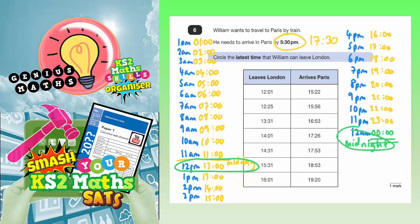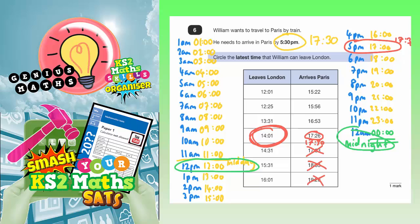So back to the question. He needs to arrive in Paris at 5:30pm. Well, 5:30pm is 17:30. So 17:30 — this train is no good because that's 17:53; he would be late. 18:53 is even after that. 19:20 is after that. So 5:30pm or 17:30 is only 4 minutes after this train arrives in Paris at 17:26. So the latest time he can leave London is 14:01. That's the one we need to circle.